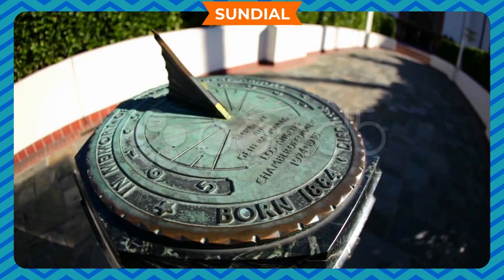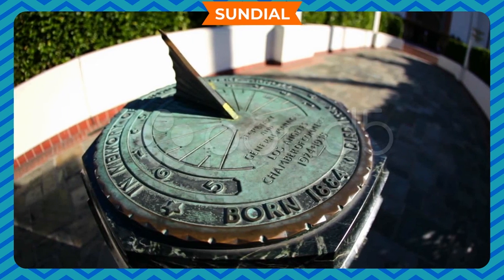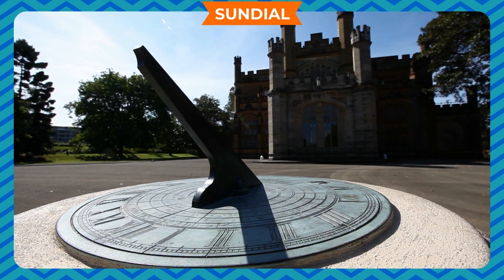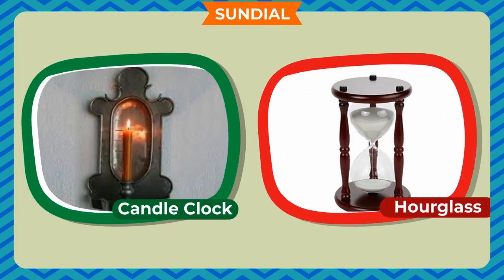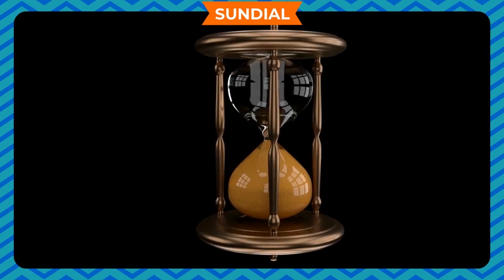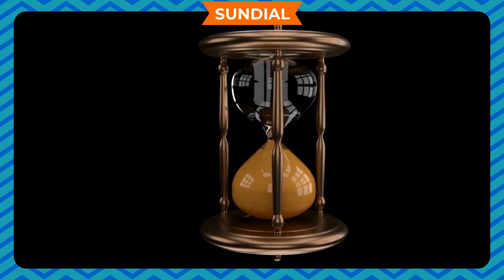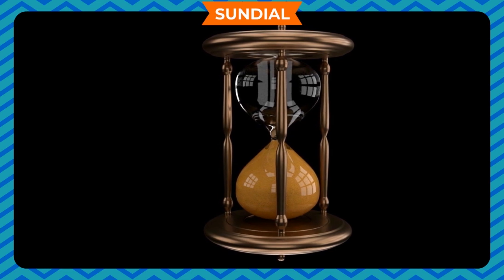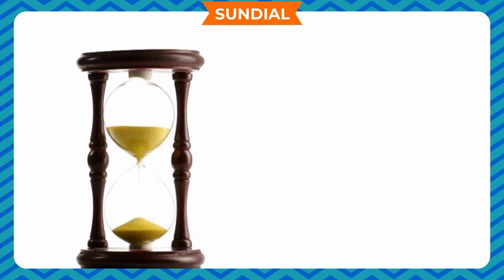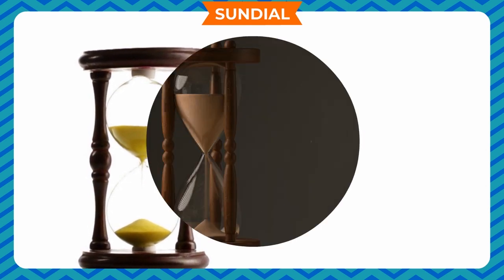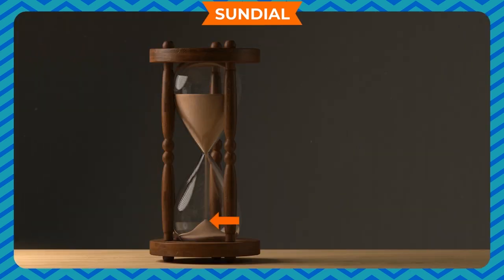Apart from the sundial, there are other primitive instruments of measuring time such as the candle clock, hour glass, water clock, etc. The hour glass consists of two rounded glass bulbs connected by a narrow neck of glass. The top bulb was filled with sand and a measured amount of sand particles streamed down from the top bulb into the bottom bulb, giving the time.